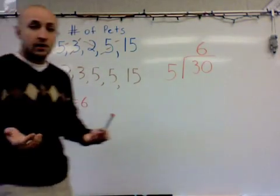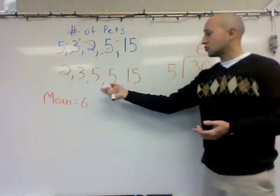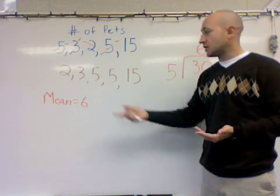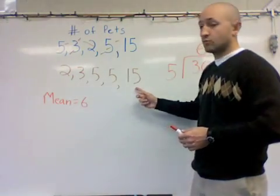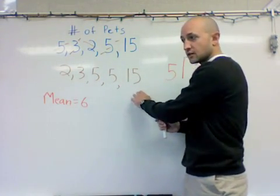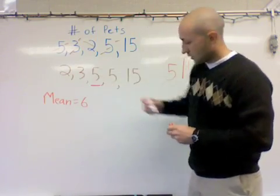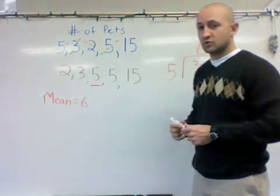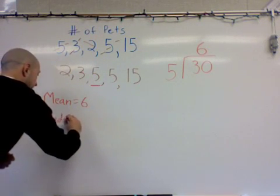We now have the mean. Next we want to find the median and the mode. To find the median, all we have to do is look at our number set and find the number in the middle. We have one, two, three, four, five values — an odd set. Whenever we have an odd set of numbers, it's easy to find the median because it has the same amount of numbers on the right as on the left. Five is my median number, with two numbers to the right and two to the left. So the median equals five.